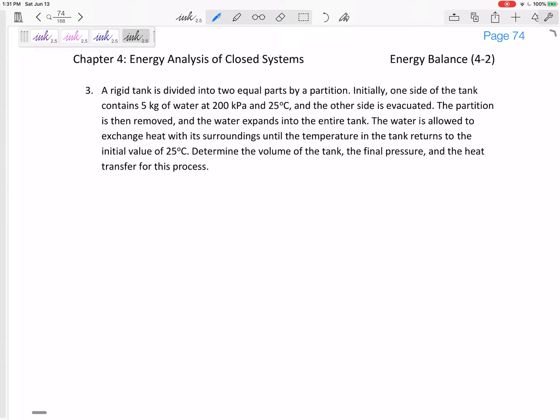All right, so what if I throw this at you? Rigid tank. It's divided into two equal parts by partition. Initially, one side of the tank contains five kilograms of water at 200 kPa and 25 degrees C. And you know by now, just because we say water doesn't mean liquid water, right? Could be superheated, could be mixture. The other side is evacuated. The partition is then removed and the water expands into the entire tank. Water is allowed to exchange heat with its surroundings until the temperature in the tank returns to the initial value, 25 degrees C.